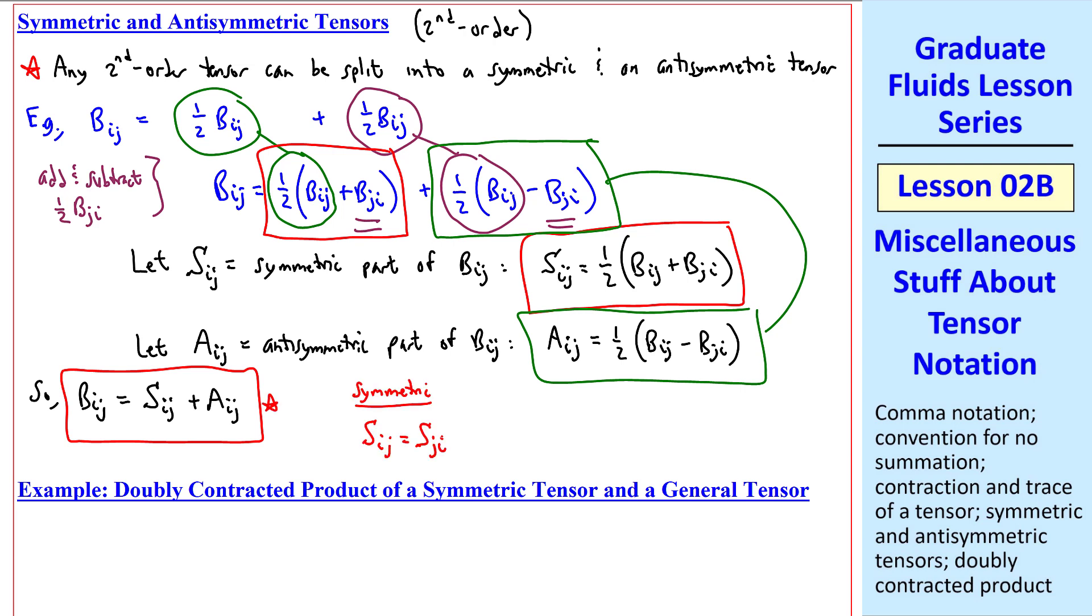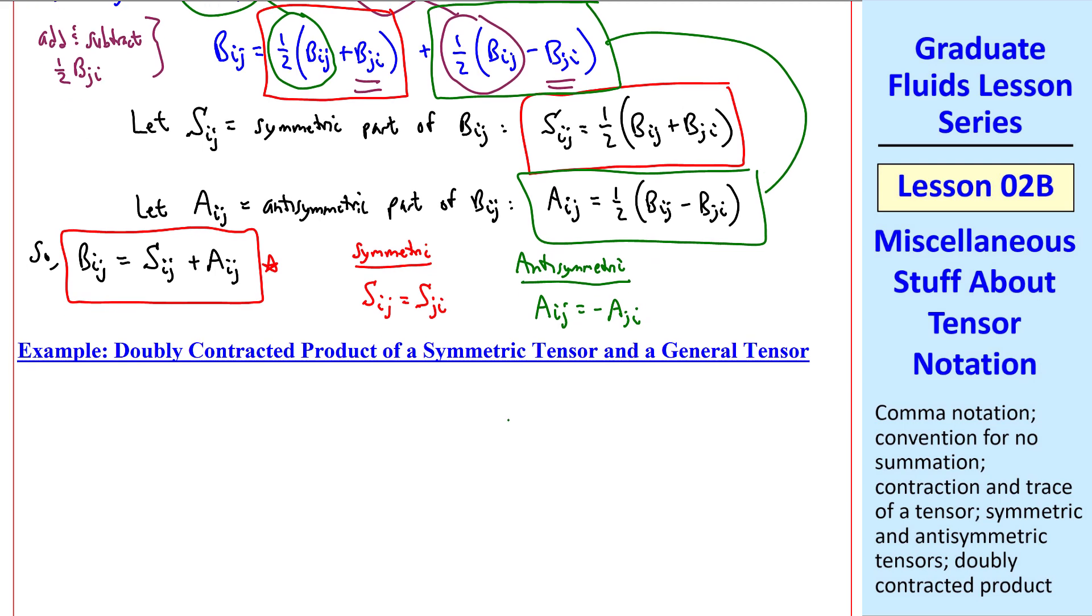Note that symmetric means that Sij equals Sji. And antisymmetric means that aij is negative aji.